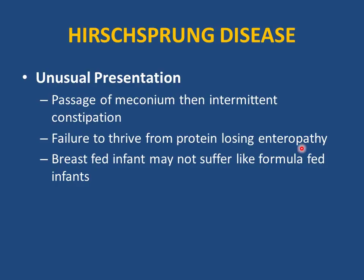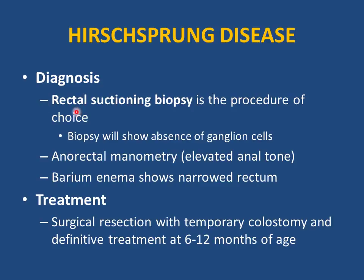Diagnosis of Hirschsprung disease: rectal suction biopsy is the procedure of choice — showing absence of ganglion cells. Anorectal manometry shows elevated anal tone. Barium enema shows the narrow rectum (aganglionic segment) as the area of obstruction. Treatment: surgical correction with temporary colostomy, then definitive correction at 6-12 months of age.